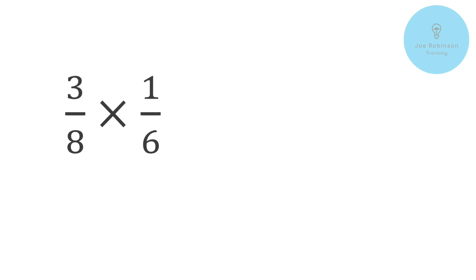What have we got? We've got three eighths times by one sixth. So again we're just going to apply that exact same logic that we've already done. We're going to say multiply the top two numbers together. Three times one. That gives us three at the top and then we multiply the bottom two numbers together. So eight times six. Now eight times six is going to give us 48.